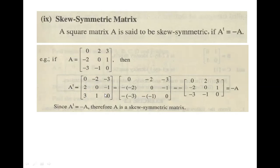When you compare the corresponding entries of A and A^T, you will see that the numbers are the same but their signs are different. For the zero entries — 0, 0, 0, 0 — zero has no sign. But for the non-zero entries: +2 and -2, +3 and -3, then -2 and +2, then +1 and -1. The non-zero elements of A and A^T are opposite in sign — the magnitudes are the same but the signs are different.